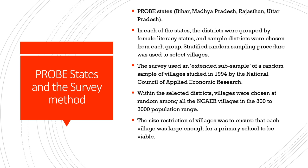The probe states were Bihar, Madhya Pradesh, Rajasthan, and Uttar Pradesh. We are talking about 1996 to 1999, when Madhya Pradesh was still undivided — before it was bifurcated into Madhya Pradesh and Chhattisgarh. In each of the states, the study was carried out at the village level, with a focus on rural areas and impoverished families. The districts were grouped by female literacy status based upon Census 1991 data, and sample districts were chosen from each group.